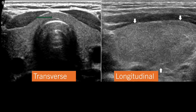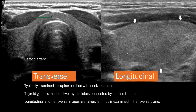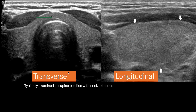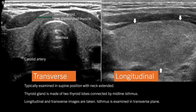In the longitudinal image of the thyroid gland we see this type of image — this is one thyroid lobe. The thyroid lobe is hyperechoic compared to the surrounding muscles. Here we can see the carotid vessels, the trachea, and the sternothyroid and sternohyoid muscles. Normally, the thyroid is examined in the supine position with the neck extended for better visualization.